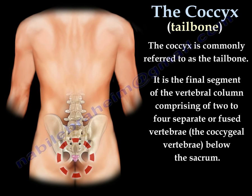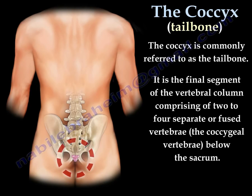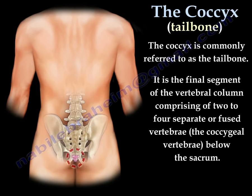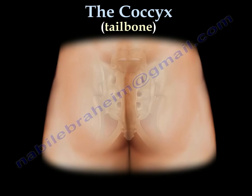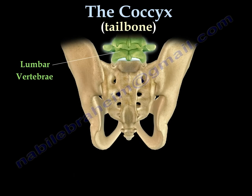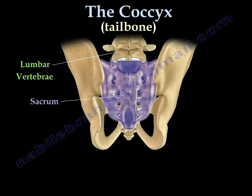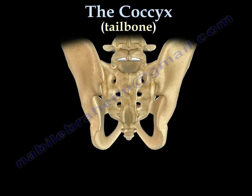The coccyx is at the lower end of the spine, below the sacrum. The lower back is called the lumbar vertebrae, followed by the sacrum, and then the coccyx — the tailbone.